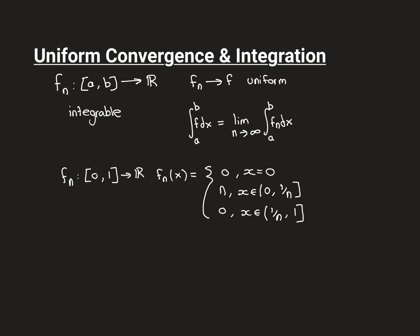Here is the counter-example. My sequence of functions is going to be defined over the closed interval [0,1], and they're going to be real-valued functions. This is how I'm going to define each one of them: fn will map x onto a compound function. It's going to map the point 0 always onto 0 — so every single one of them will be 0 at 0 — and you'll see why that's important in a moment.